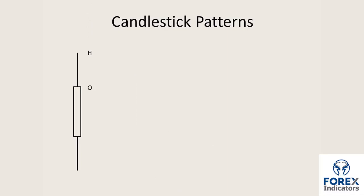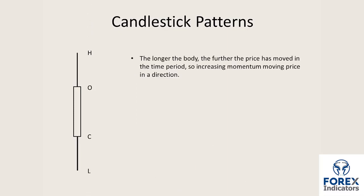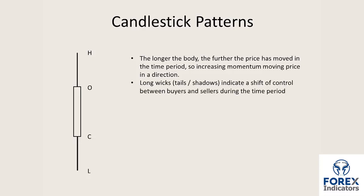Here we have the open, high, low and close of a candle. The longer the body, the further the price has moved in the particular time period. The distance between the high and the low determines the range of the market within that time period. This also gives an indication as to momentum increasing and moving price in a particular direction. The long wicks or tails or shadows indicate a shift in control between buyers and sellers during the time period that the candle was forming.